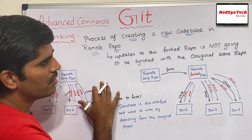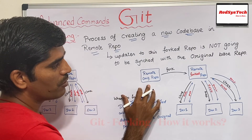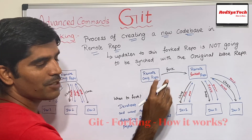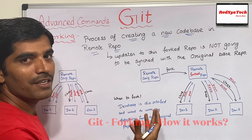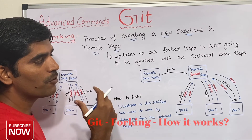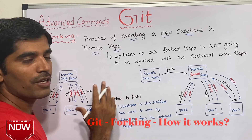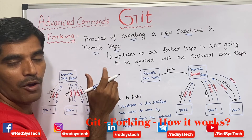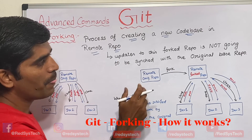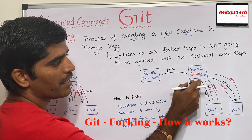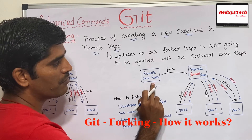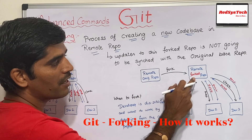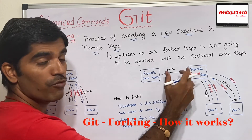In the remote repository there is an original repository, and a developer can fork it. There are no command-line commands to do forking — you can do it in the graphical user interface. If you use GitHub or GitLab, you have an option to fork it. Once you fork it, it will create a copy from the remote repository — that copy is nothing but the forked repository.